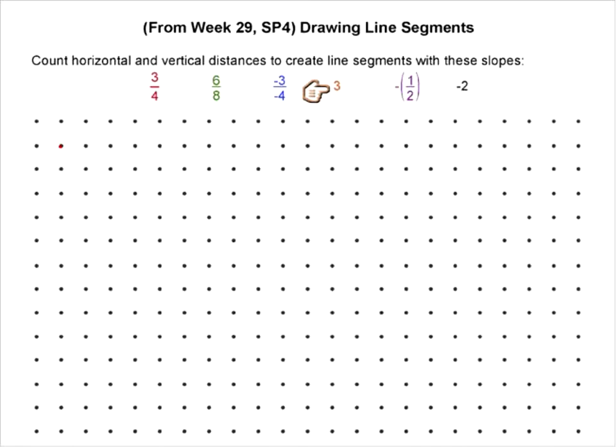Joe, you will do this orange one, which is three, a slope of three. Pat, you will do the purple one. And Shelly, you will do the last one, negative two, the black one. So everybody, if you want to try to use the same color as the slope, so that way we can kind of check everybody's work.